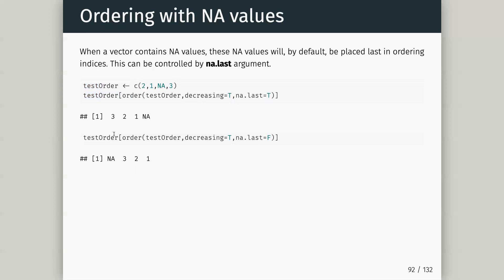When a vector contains NA values, by default those NA values will be placed last in the ordering indices. R will do the ordering and then place the NA at the bottom. That's worth noting because when you order a table the bottom isn't necessarily the lowest value — it could be NAs. You can change na.last to FALSE and it will put the NAs at the top instead.